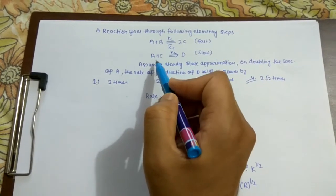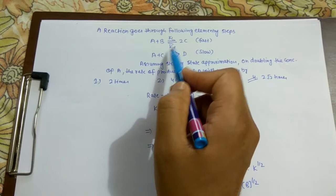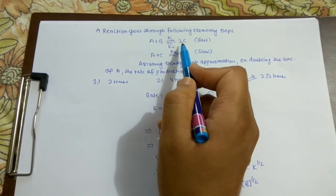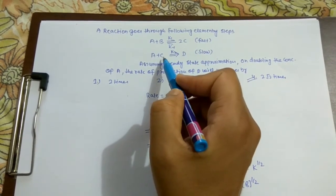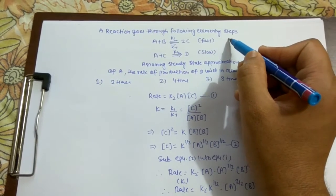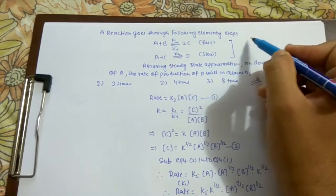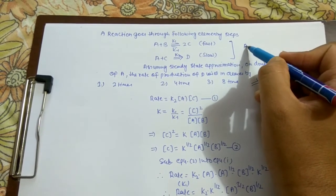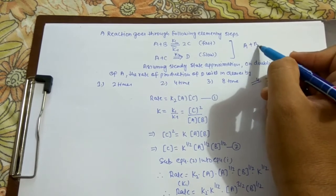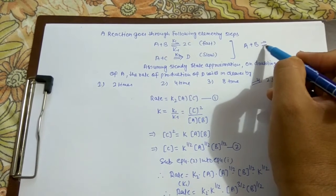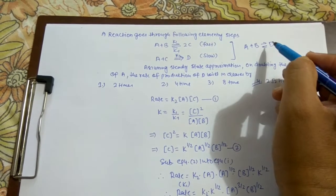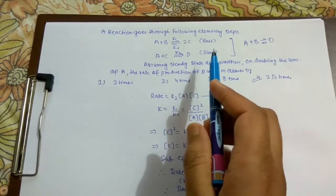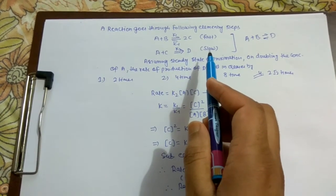First, we have to see what is the intermediate. Here we see that in the first step C is formed and here it is consumed. The overall reaction will become A + B gives D. In such type of reaction, rate depends on the slowest step.